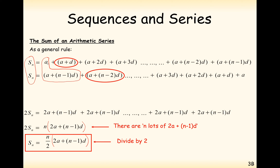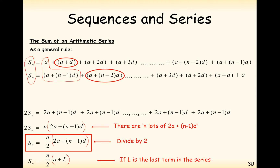You just need your starting value a, common difference d, and number of terms n to sum any arithmetic sequence. There's also a second useful formula, as Gauss used it: Sn = n/2 × (a + L), where L is the last term. So you have two useful formulas for summing an arithmetic series.